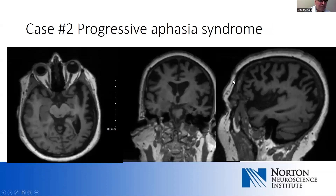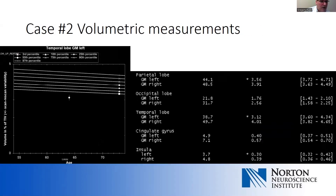Her MRI is quite striking: there is marked asymmetry in the temporal and, to some degree, the parietal structures in the left language regions. On coronal views it's also very striking, and on sagittal views you see marked volume loss in these perisylvian structures. Volumetric studies show temporal lobe gray matter volume well below the third percentile, with atrophy in the left parietal lobes — everything very asymmetric. This is a case of logopenic variant primary progressive aphasia due to Alzheimer's disease.